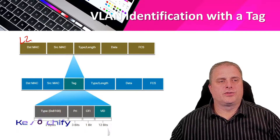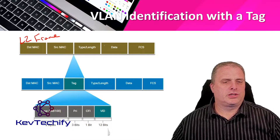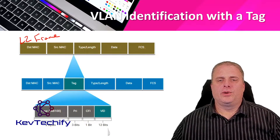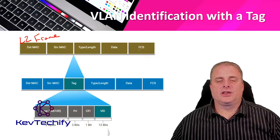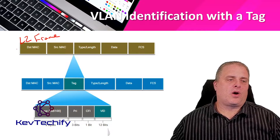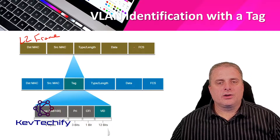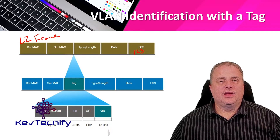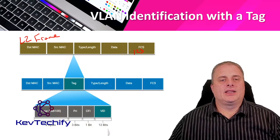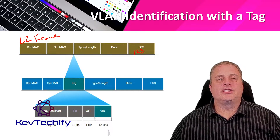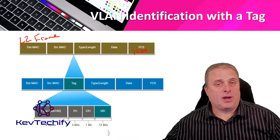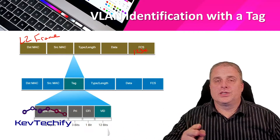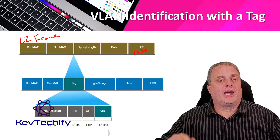Here we have our Layer 2 frame — destination MAC address, source MAC address, type length, data, and the frame check sequence. The frame check sequence uses the CRC — cyclic redundancy check — algorithm. It takes all the frame information, runs it through the algorithm, and stores the result. When the next device receives the frame, it calculates its own CRC and compares it. If it matches, the frame is forwarded; if not, the frame is deleted. Layer 2 is responsible for error detection, not error correction — correction happens at higher layers.